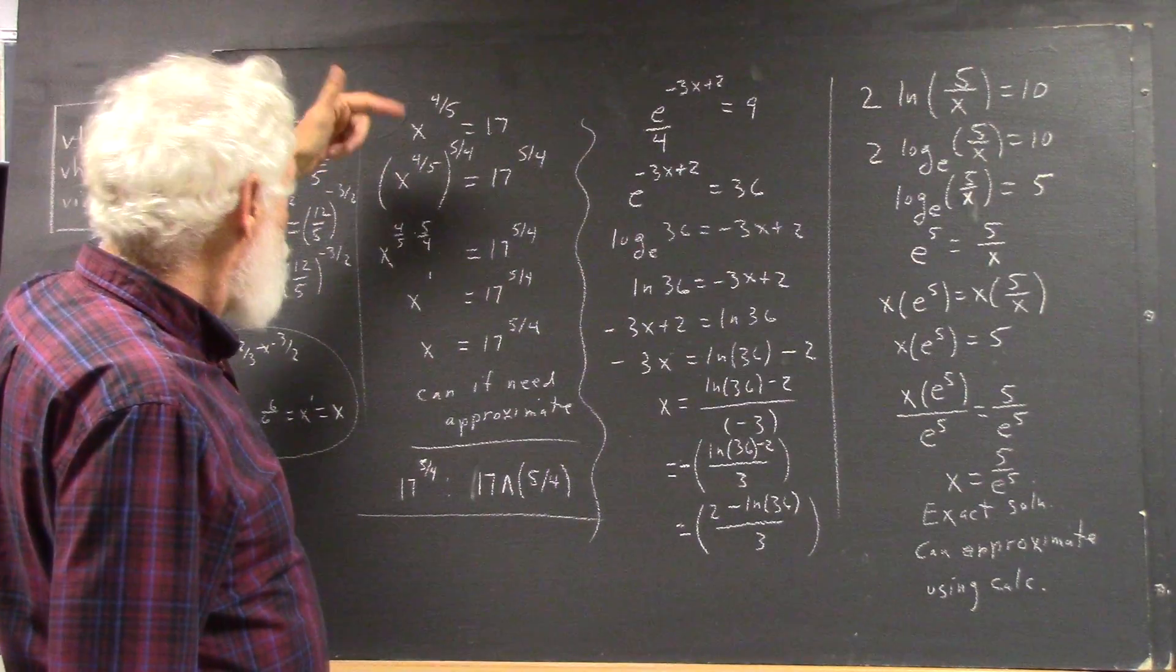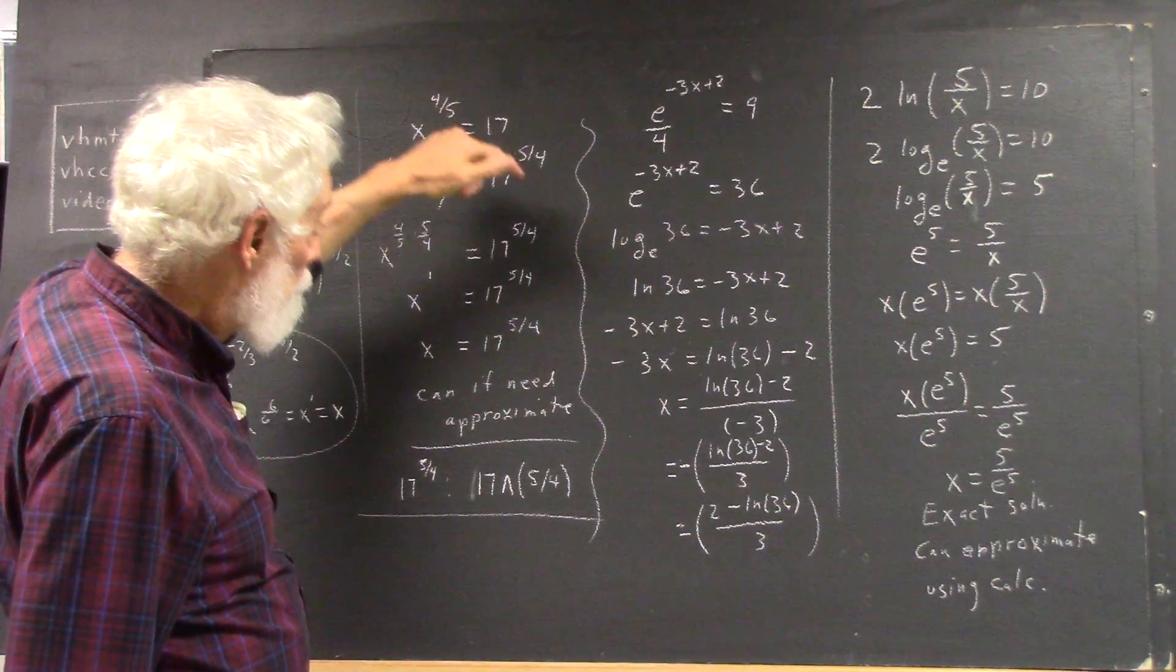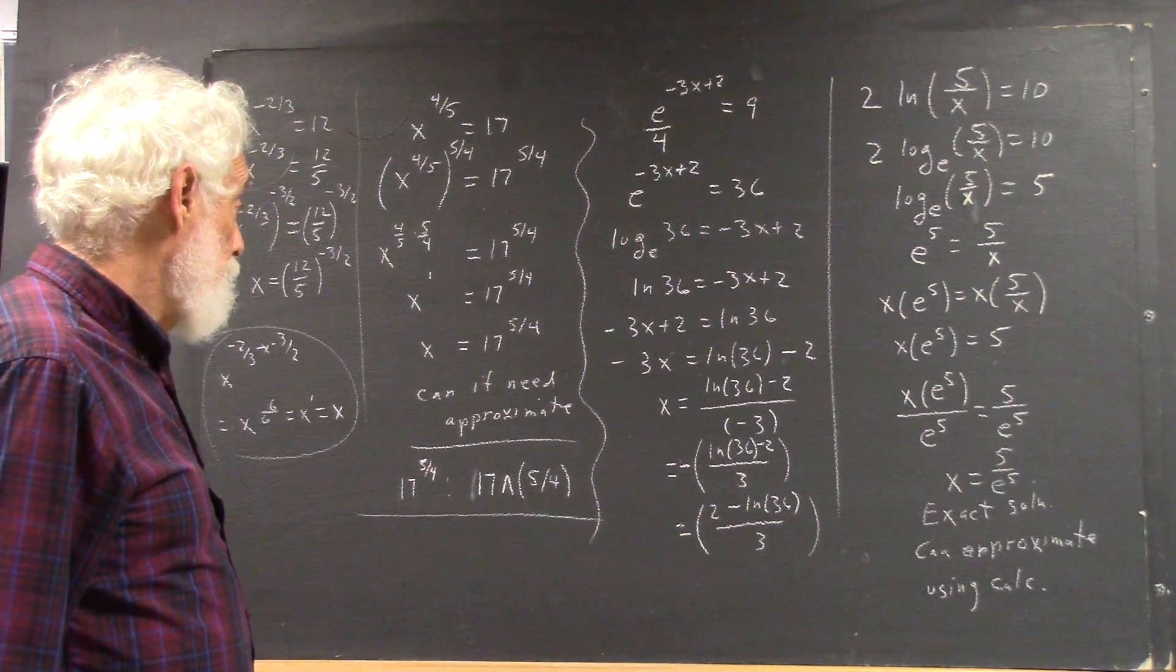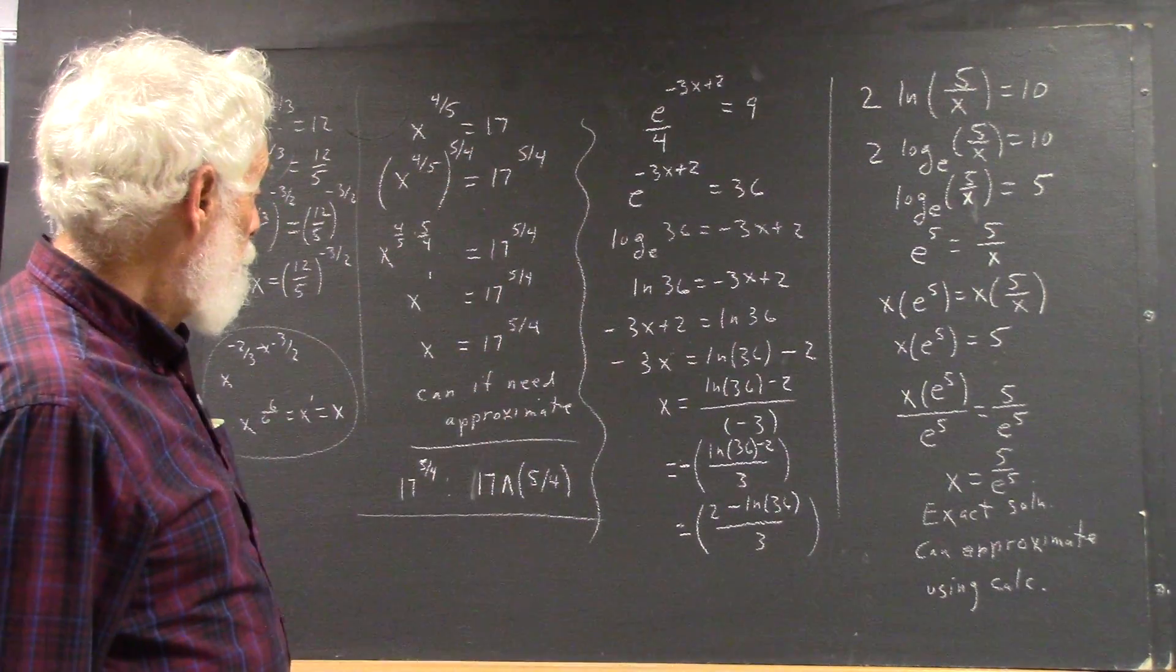Now, when we take the 5/4 power of this side, we also have to take the 5/4 power of this side. That gives us 17 to the 5/4, and that's the same all the way down.